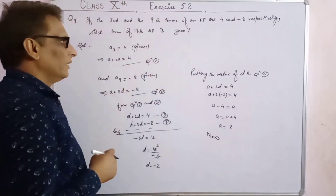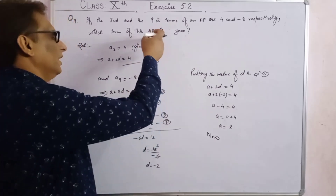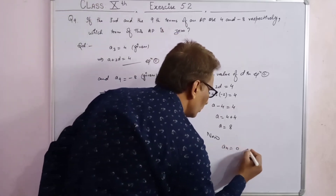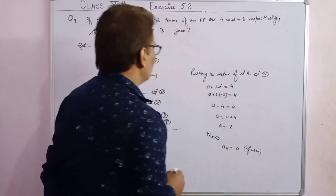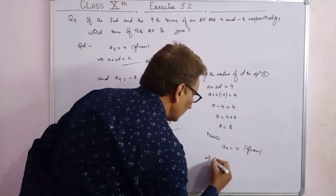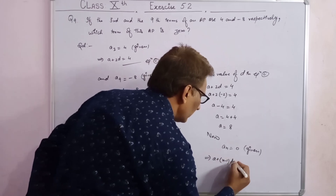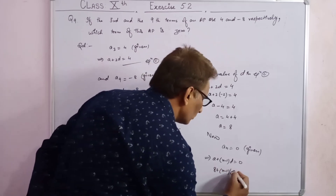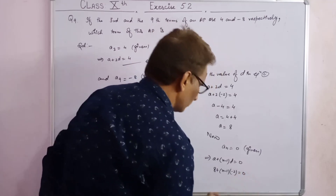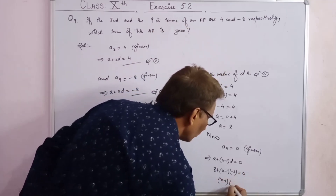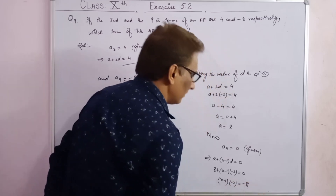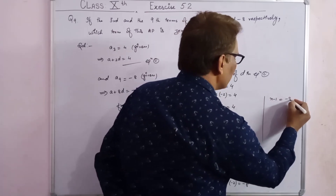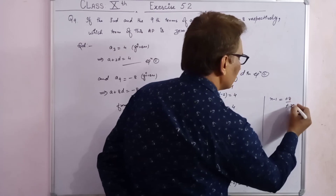Now, which term of this AP is 0? Using the formula: a plus (n minus 1) into d equals 0. Substituting: 8 plus (n minus 1) into (minus 2) equals 0. So (n minus 1) into (minus 2) equals minus 8. Therefore n minus 1 equals minus 8 upon minus 2, which gives n minus 1 equals 4.